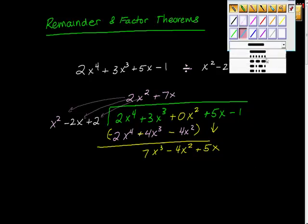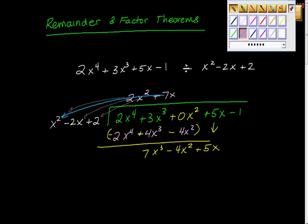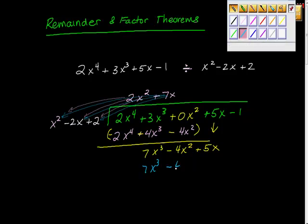Now we're going to do the same thing we did in the last one — we're going to distribute this 7x to here, to here, and to here. 7x times x squared is 7x cubed — that's what we were hoping for. 7x times negative 2x is negative 14x squared. And then lastly, 7x times 2 is positive 14x.